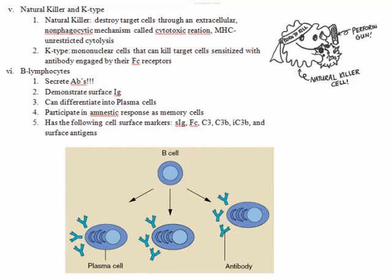Natural killer cells destroy cells through an extracellular non-phagocytic mechanism called a cytotoxic reaction — they go in and destroy cells without needing an antibody tag because they recognize foreign cells. K-type cells are mononuclear cells that kill cells sensitized with an antibody, engaged by their Fc receptors. So the difference is: natural killer cells destroy naturally, while K-type cells need an antibody attached.